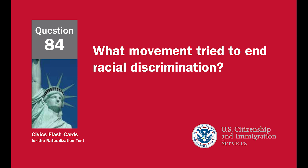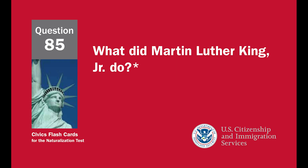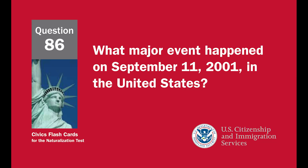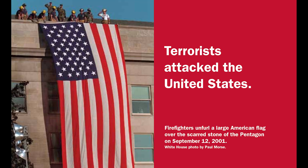What movement tried to end racial discrimination? Civil rights movement. What did Martin Luther King Jr. do? Fought for civil rights. Worked for equality for all Americans. What major event happened on September 11, 2001, in the United States? Terrorists attacked the United States.